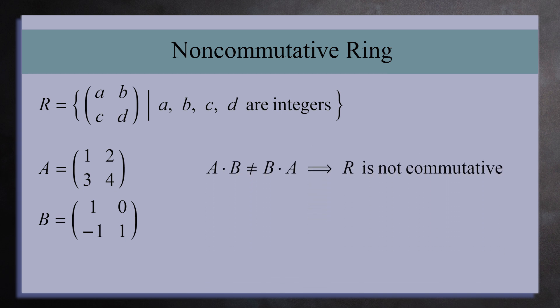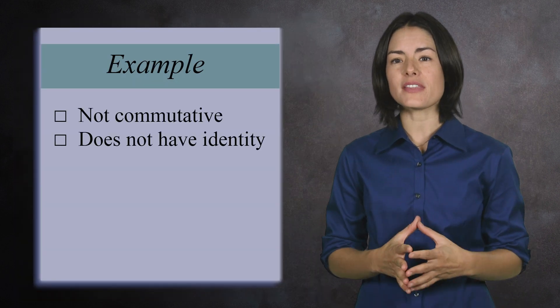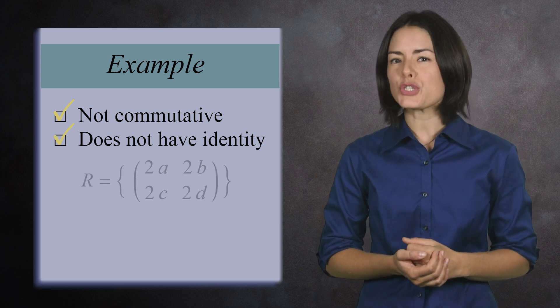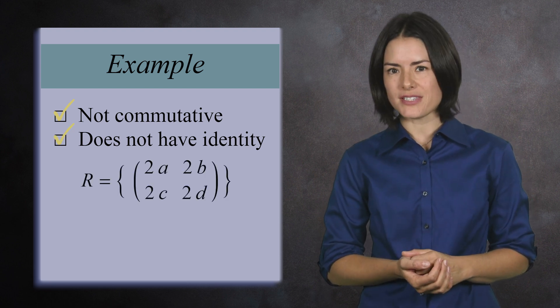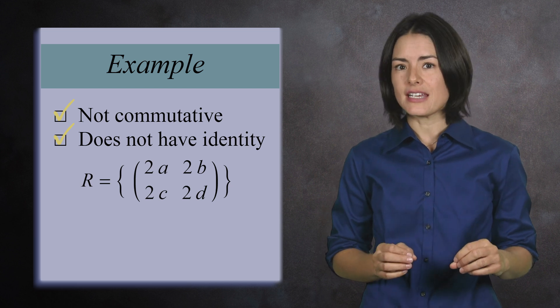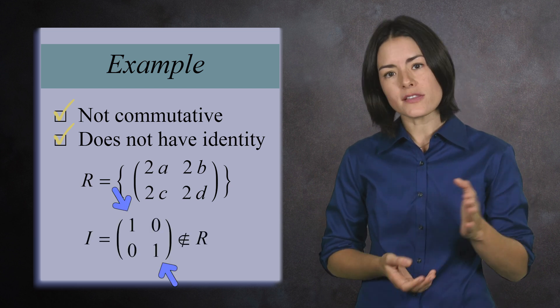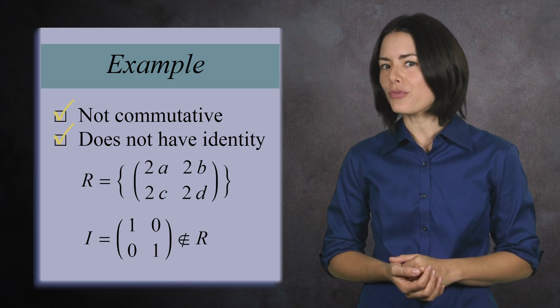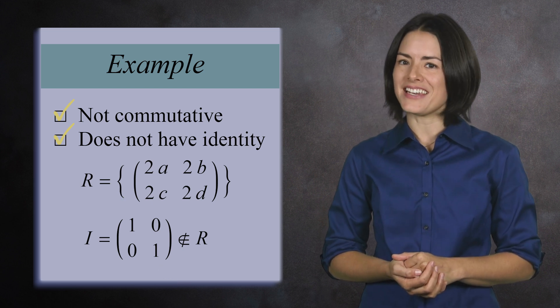As a consolation prize, however, it does have an identity element. The 2x2 identity matrix. Just for fun, let's see a ring that is not commutative and does not have an identity. The 2x2 matrices with even entries. This definitely does not have an identity, since the identity matrix has 1s along the diagonal, and 1 is an odd number. This poor ring is having an identity crisis.